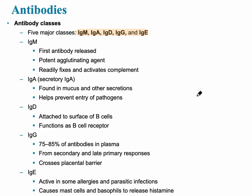The five classes of antibodies are M, A, D, G, E — remember 'MADGE' to recall them. IgM is the first antibody released, and it readily fixes and activates complement. Complement is part of the second line of defense and is a group of proteins.